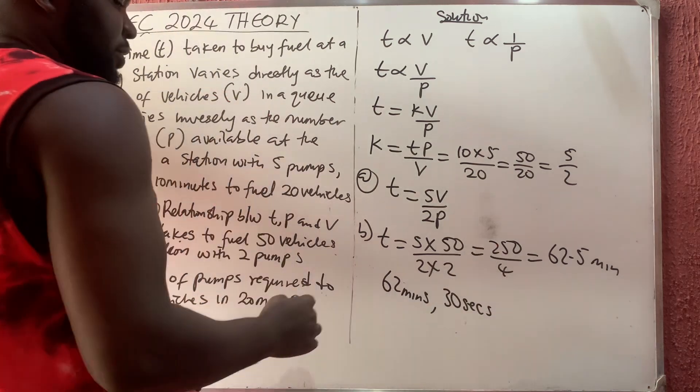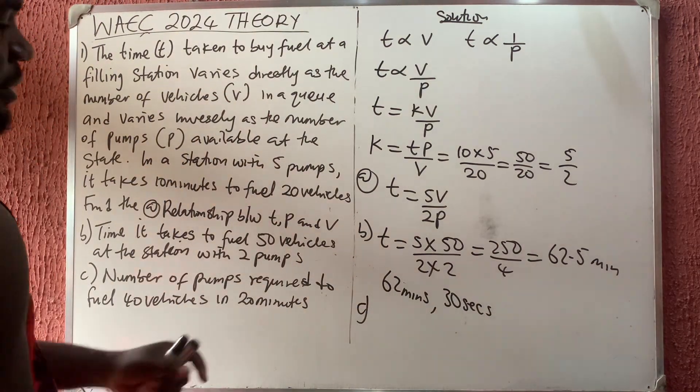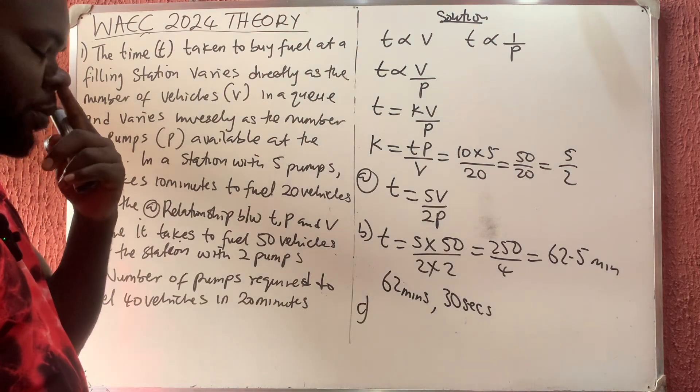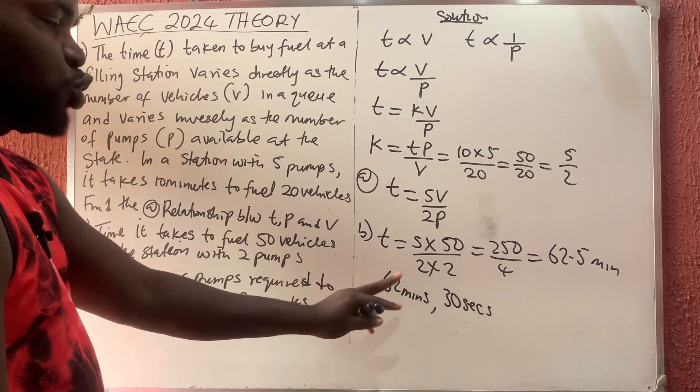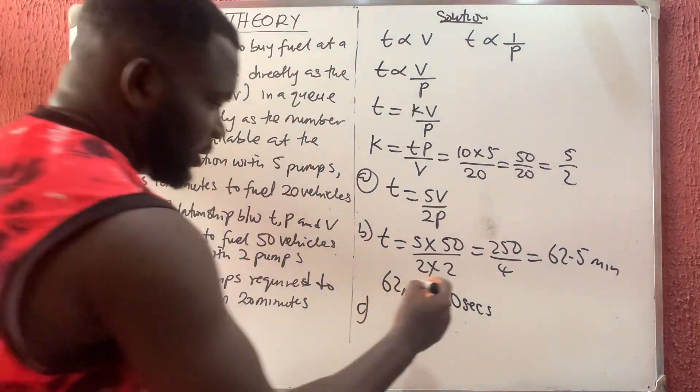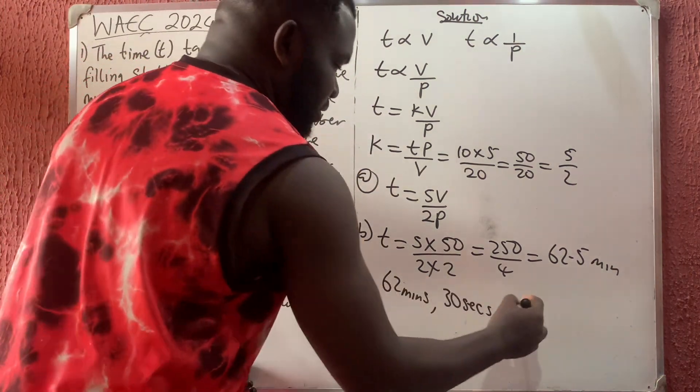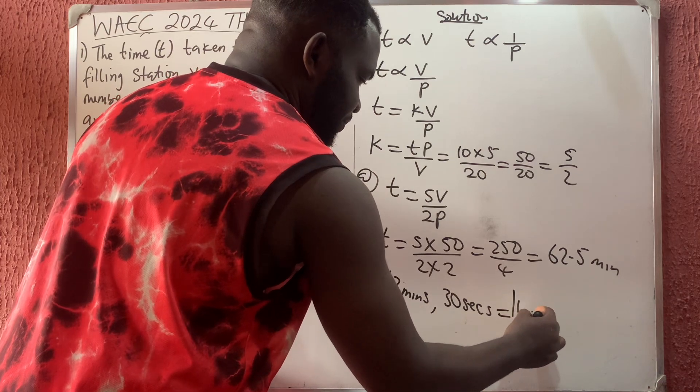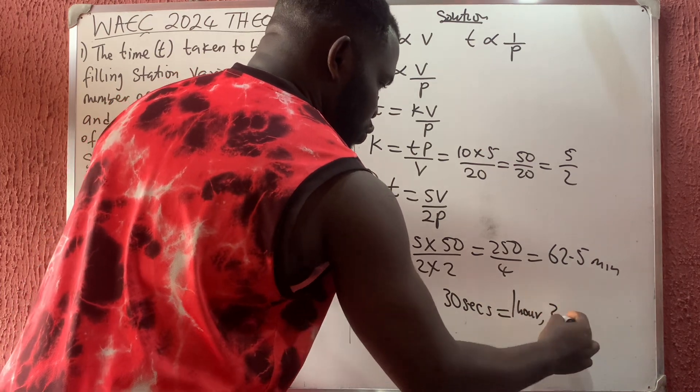If I want to convert it to hours, you know that 60 minutes make one hour, so it's going to be one hour, two minutes, 30 seconds. This is that: 60 seconds, 60 minutes make one hour, so one hour, two minutes, and 30 seconds.